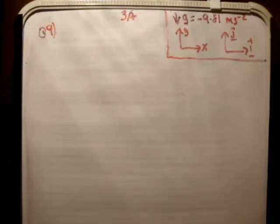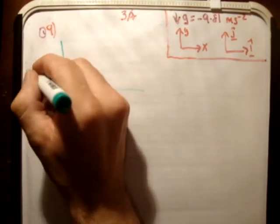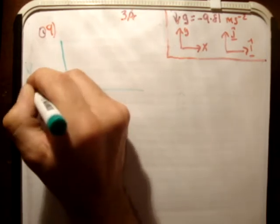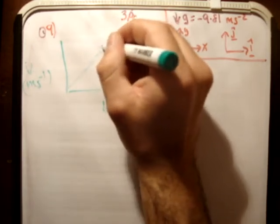So things to note here are the gravity, the xy plane and the unit vectors as normal. The next thing is to sketch the motion. So we have velocity measured in meters per second and time measured in seconds. We have our initial velocity vector here.